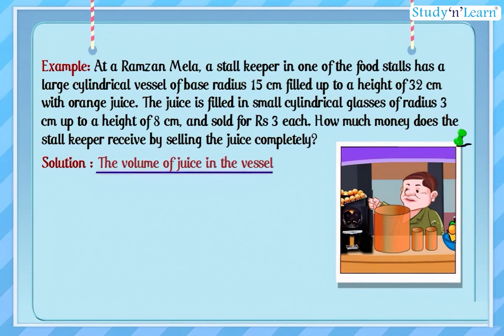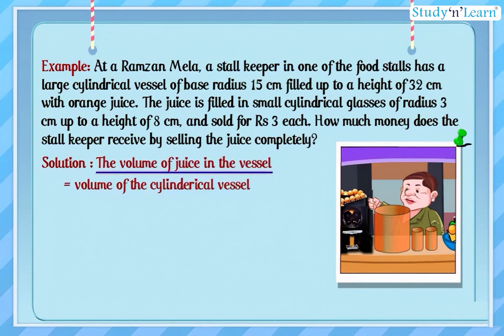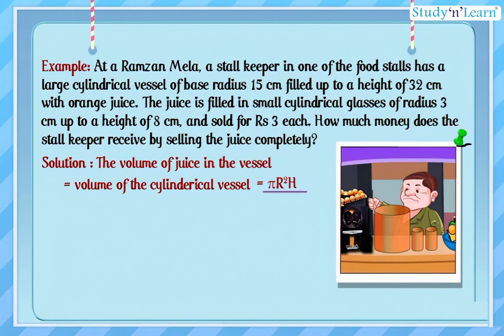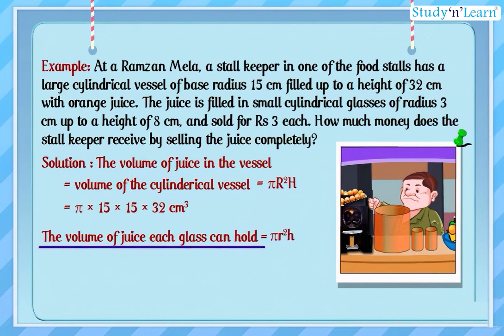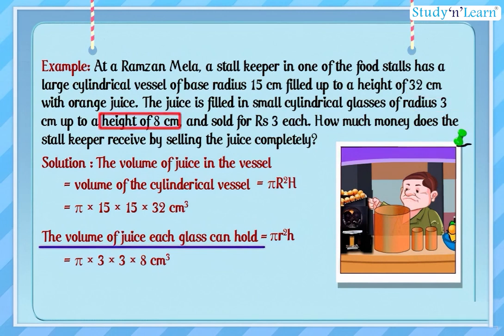Solution: The volume of juice in the vessel equals the volume of the cylindrical vessel, which is pi R square H, where capital R and capital H are the radius and height of the vessel respectively. This equals pi into 15 into 15 into 32 cubic centimeters. Similarly, the volume of juice each glass can hold equals pi r square h, where r and h are the radius and height of each glass respectively, equal to pi into 3 into 3 into 8 cubic centimeters.